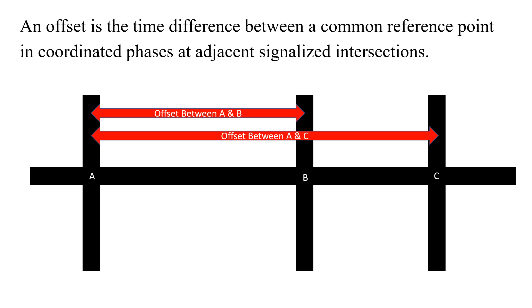For instance, you'd need to know the offset between A and B in this example and the offset between A and C to coordinate this signal system.